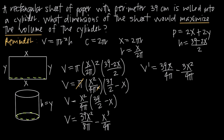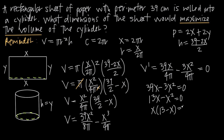Our next step is to find critical points by setting the derivative equal to zero: 0 = 39x/(4π) − 3x²/(4π). Multiplying through by 4π gives 39x − 3x² = 0. Dividing by 3: 13x − x² = 0. Factoring: x(13 − x) = 0. By the zero product theorem, x = 0 or x = 13. Since x = 0 would mean the paper doesn't exist, x = 13 is our critical point.